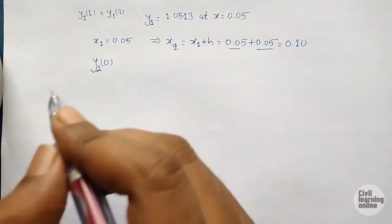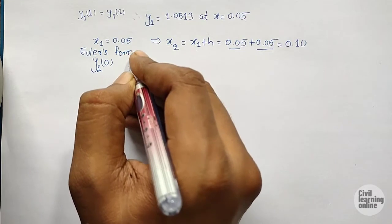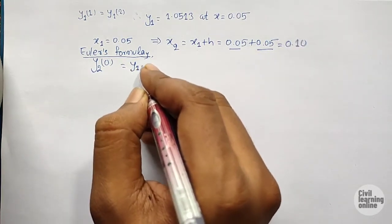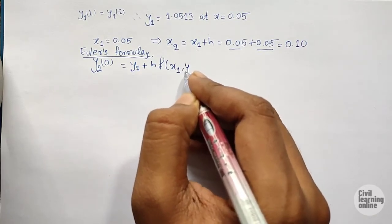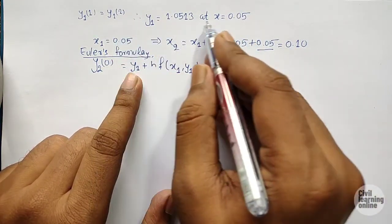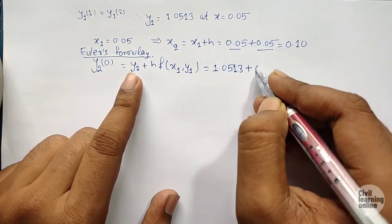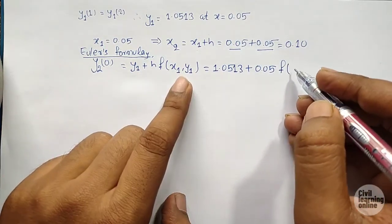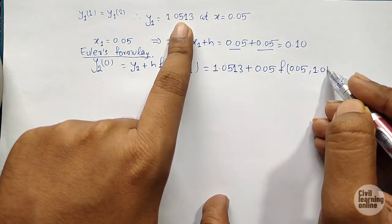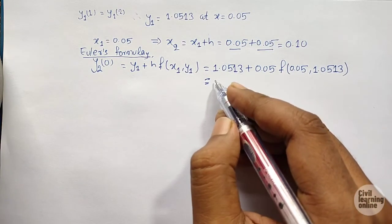By Euler's formula: y₂⁰ equals y₁ plus h·f(x₁, y₁). Putting values: y₁ equals 1.0513, plus 0.05 times f(0.05, 1.0513). Solving this, we get y₂⁰ equals 1.1039.